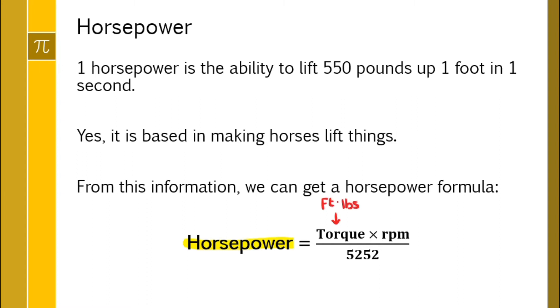Whatever torque you have, you just multiply it by the engine speed in RPM, divide it by this number, 5252, which is part of the derivation of the horsepower formula. That will give you horsepower from torque and engine speed.